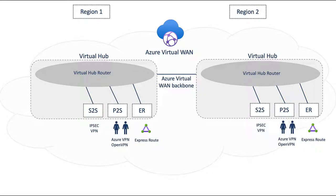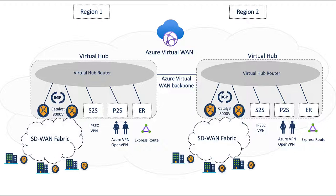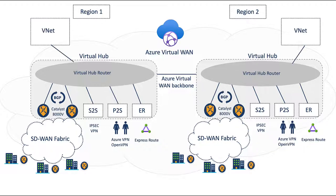Thanks to our strong partnership and engineering collaboration with Microsoft, Cisco can also deploy Catalyst 8000v routers inside the virtual hub. This allows for SD-WAN connectivity and all of its benefits. By connecting workload VNets to the virtual hubs, we make them available to all the network service endpoints and our virtual routers, both locally and across regions.